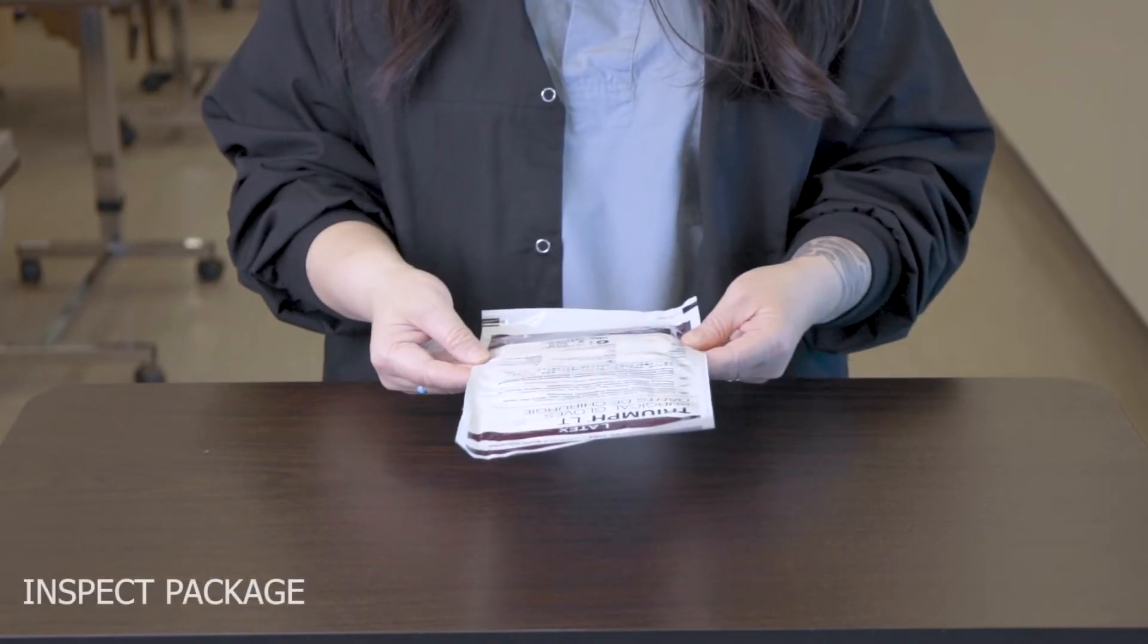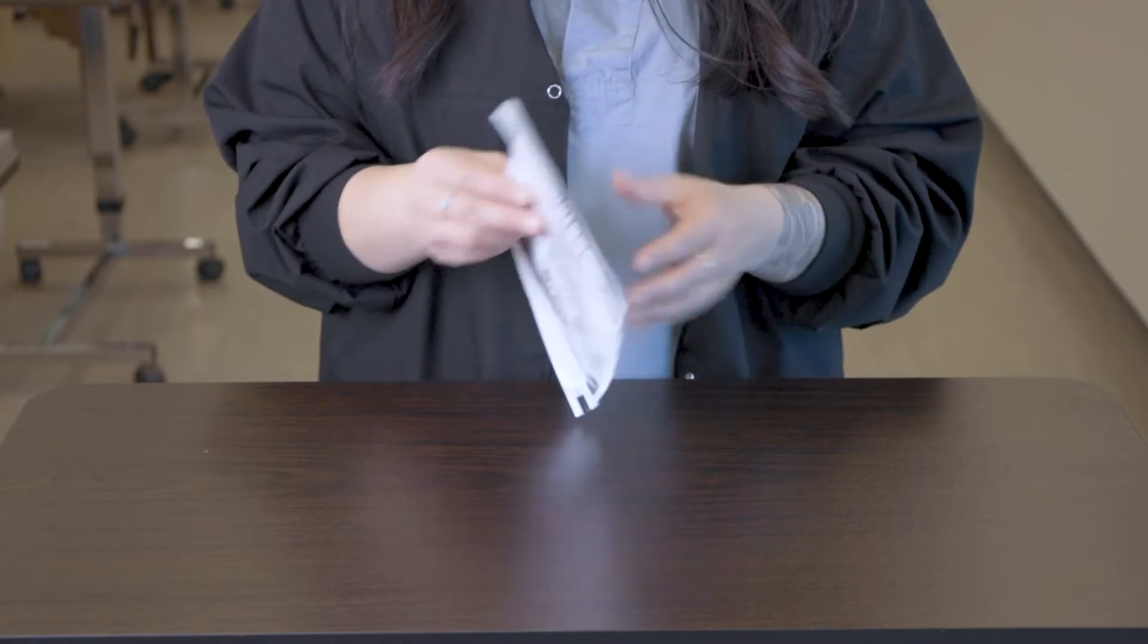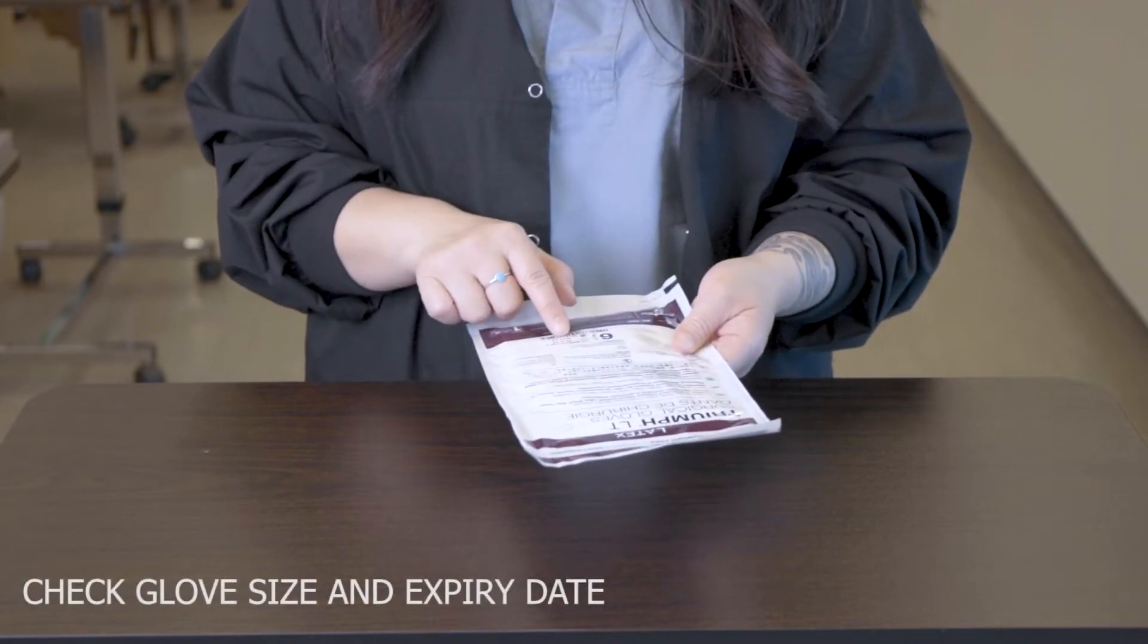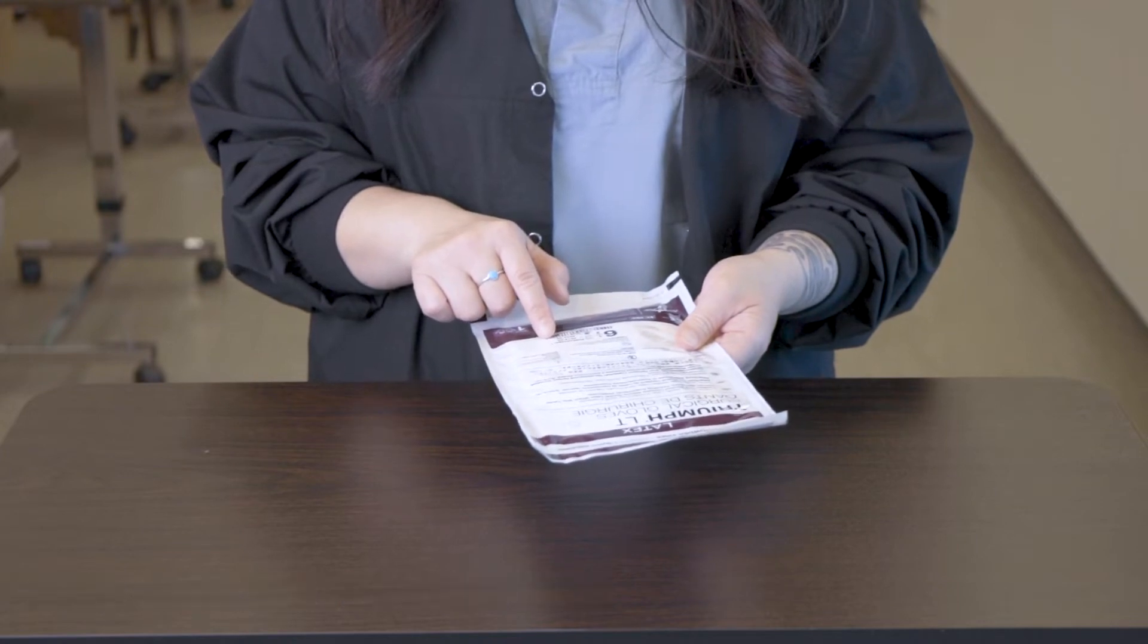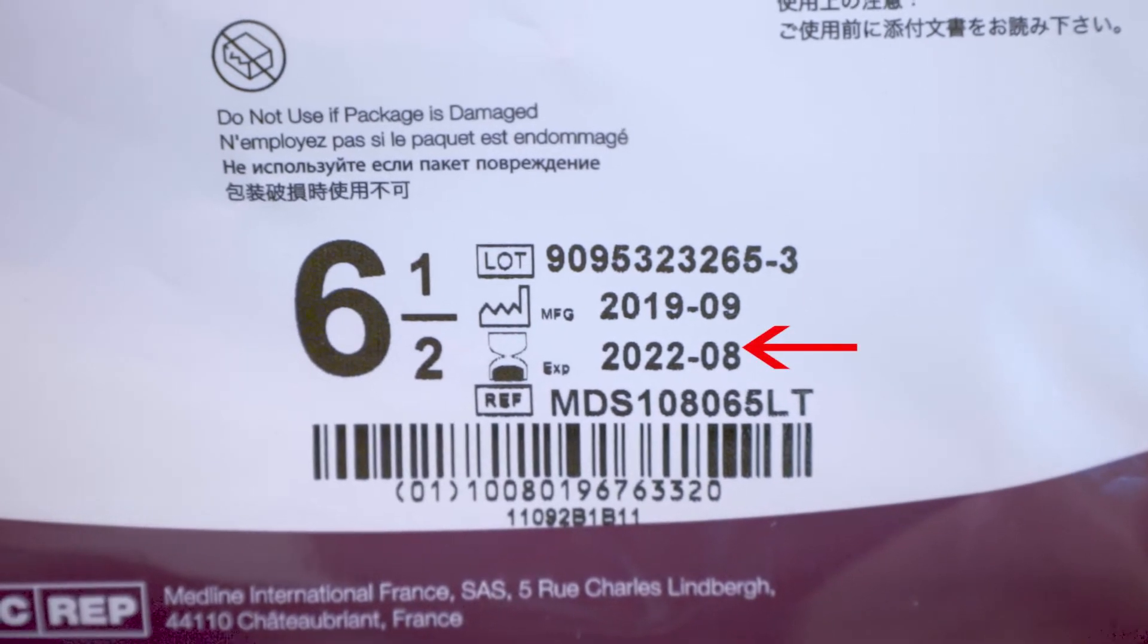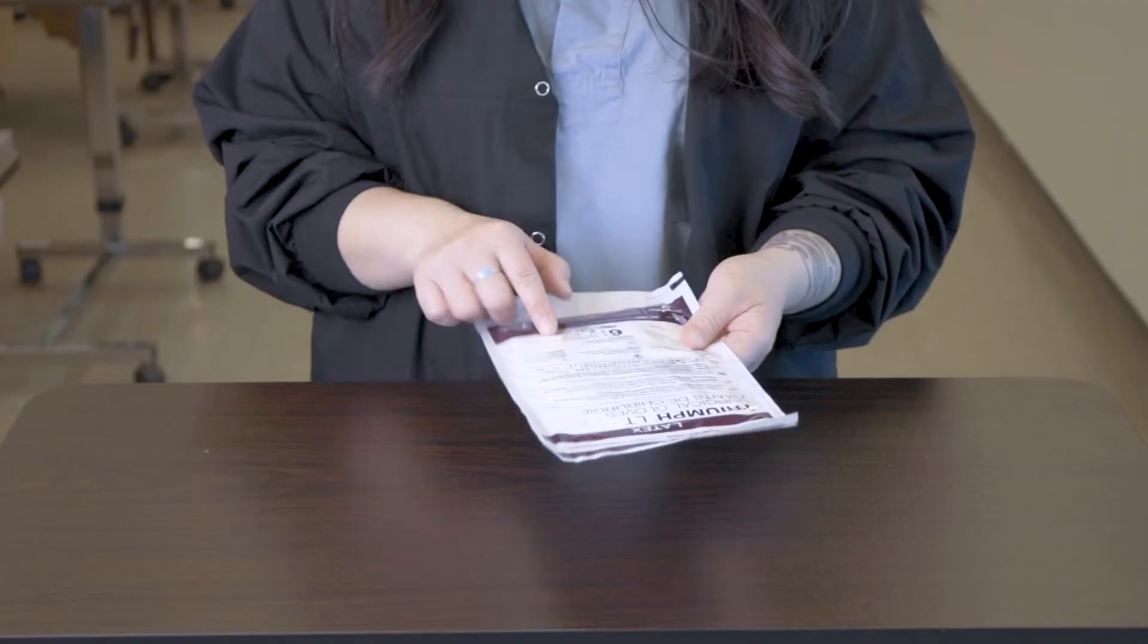Then I'm inspecting the package to ensure that it is intact, and I also want to check the glove size and the expire date. Here I'm using a size 6.5, which is in between a small and a medium, and here we can also see that the expire date is 2022 of August.